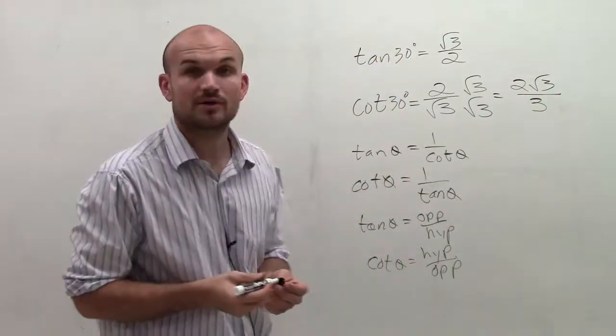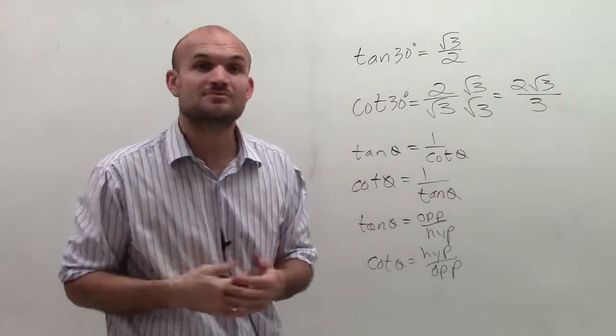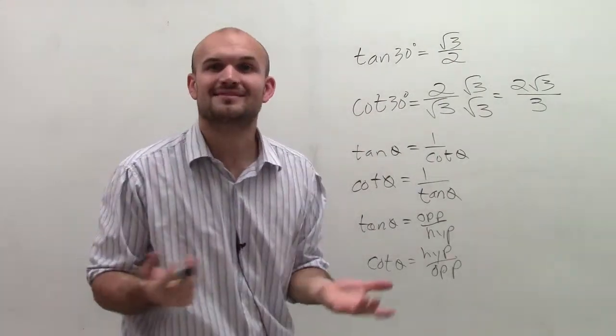So when the tangent of 30 degrees is square root of 3 over 2, the cotangent of 30 degrees is going to be equal to 2 times radical 3 divided by 3. Thanks for watching.